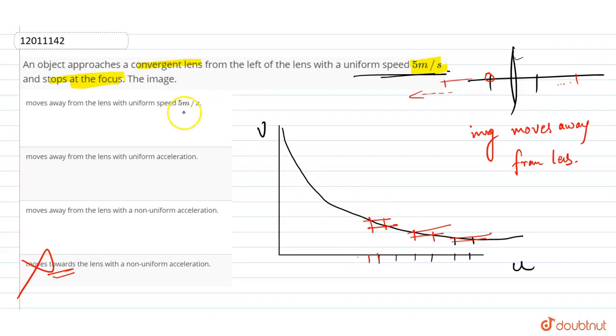This is not moving with uniform speed, so the uniform speed option is wrong.